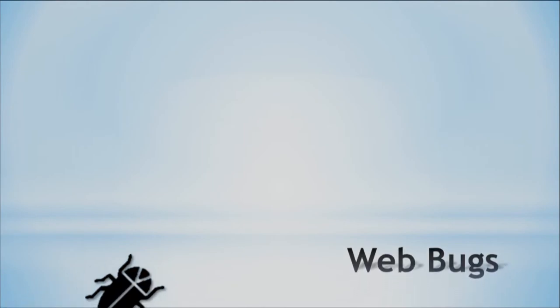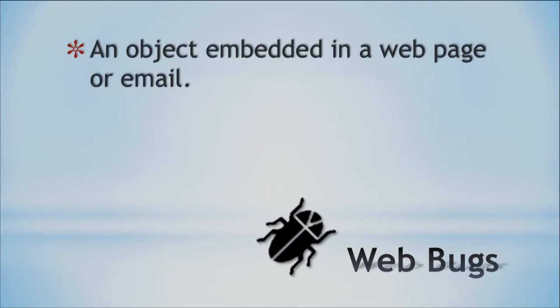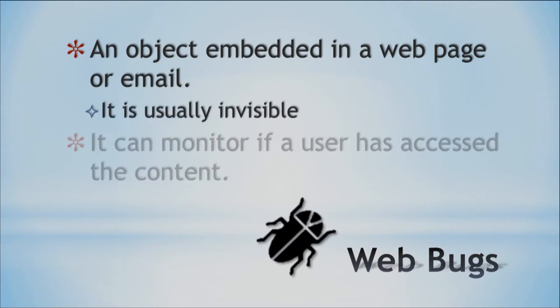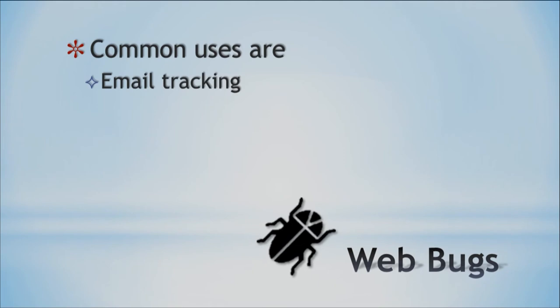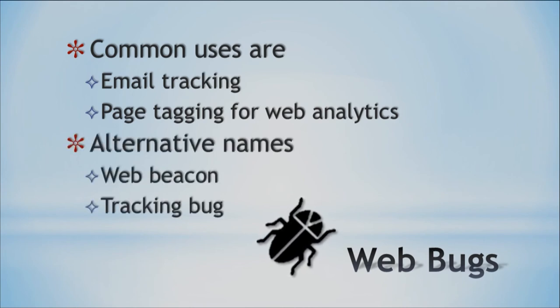Another thing we have is web bugs. This is a little object in a web page or an email that you cannot see, but it can check if you have accessed certain content. People use web bugs for tracking your email — how invasive is that — and they can tag the pages you visit for web analytics, basically to know what your habits are. Other names for web bugs are Web Beacon, Tracking Bug, and Page Tag. These things we don't see, but yet they are there. I strongly suggest that you don't get images in your email and that you use plain text email — that will get rid of quite a bit of those. Watch out what you're doing, and beware of spyware.